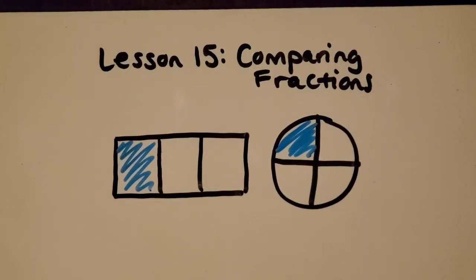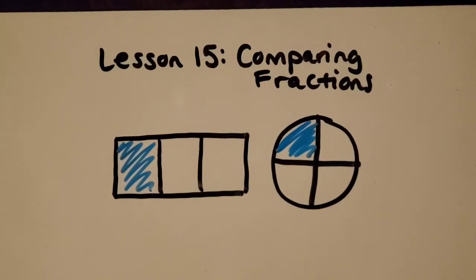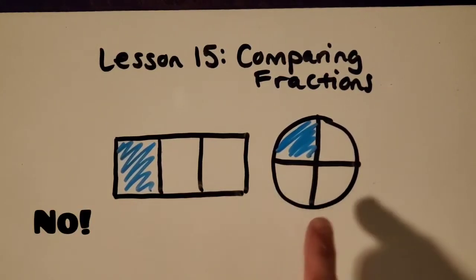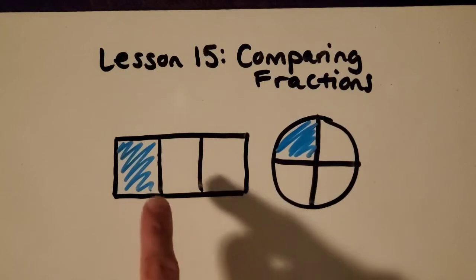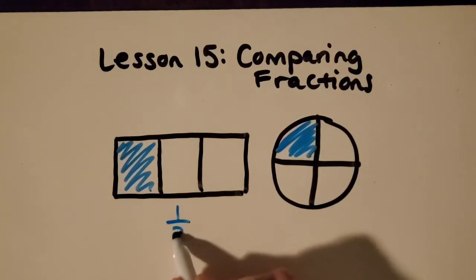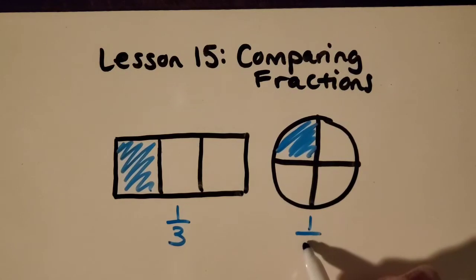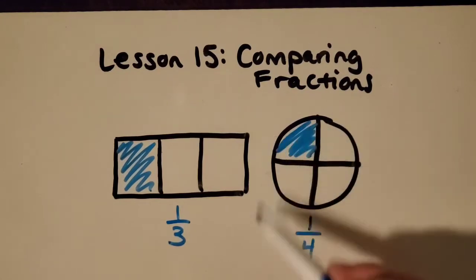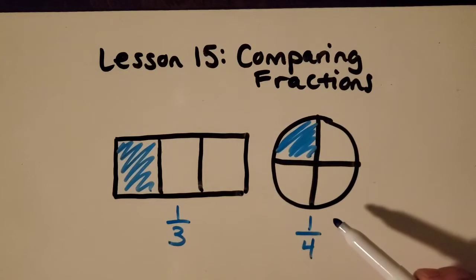So I want to start with something really, really important about comparing fractions. I want you to take a look at these two fractions and think about, are they easy to compare the way they are? Hopefully you're thinking no, because they're different shapes. They're really hard to compare, so when you're comparing two fractions, like one-third and one-fourth, we really need the whole to be the same size so that we can compare them.